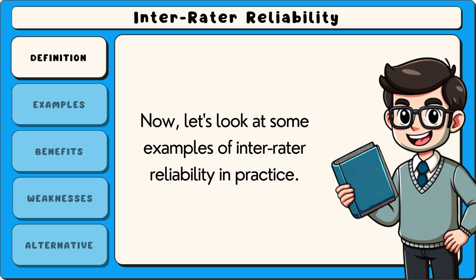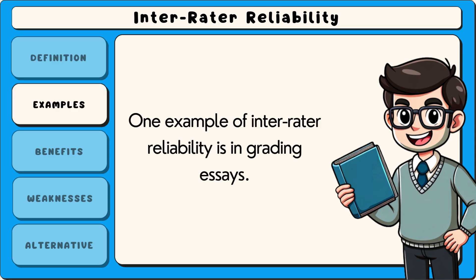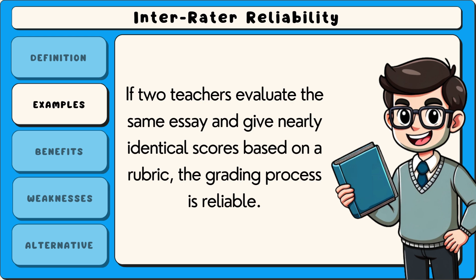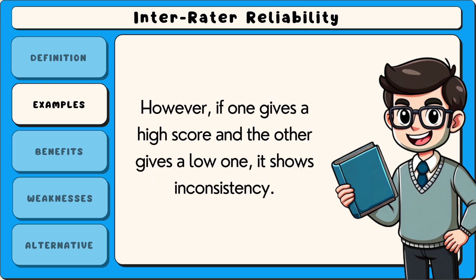Now let's look at some examples of inter-rater reliability in practice. One example is in grading essays. If two teachers evaluate the same essay and give nearly identical scores based on a rubric, the grading process is reliable. However, if one gives a high score and the other gives a low one, it shows inconsistency.